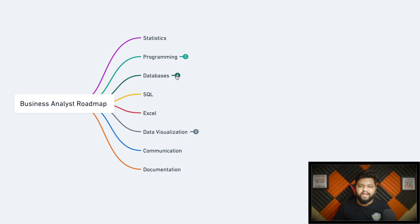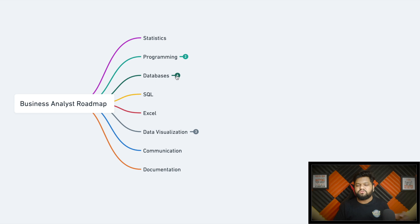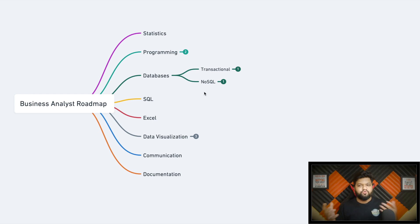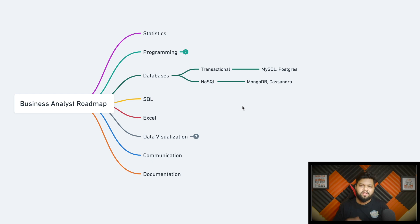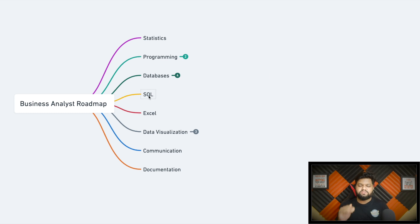Next is databases. You should have a good understanding of working with databases — the entire data modeling part, how table schema works, how to query data, and concepts like data warehouses. You'll encounter both transactional and NoSQL databases, so you should know how to observe and access the database structure. In transactional databases, MySQL and PostgreSQL are good additions to your skill set. In NoSQL, MongoDB and Cassandra are examples. These aren't hard to learn — just need a bit of time.